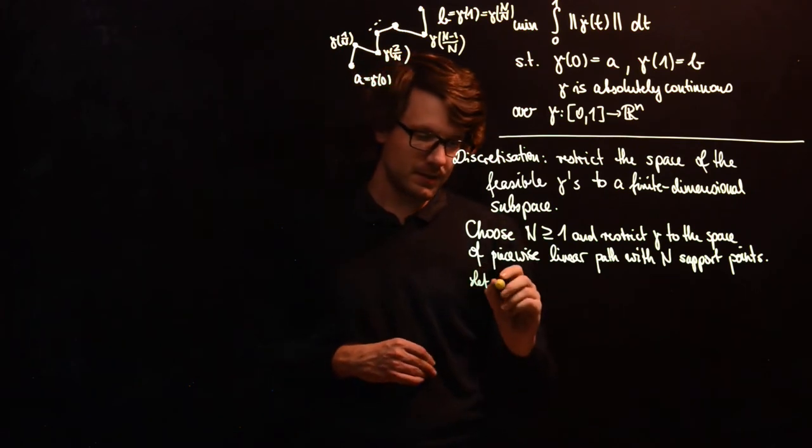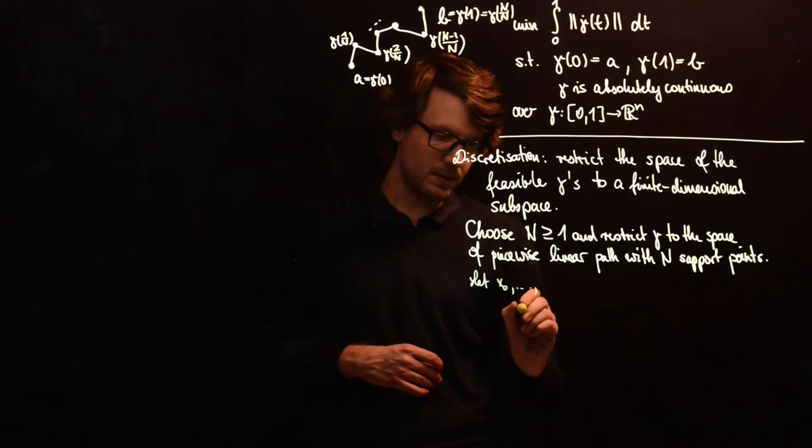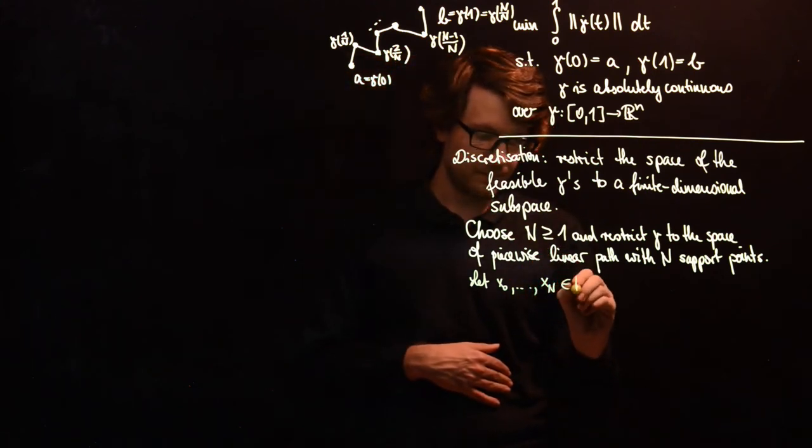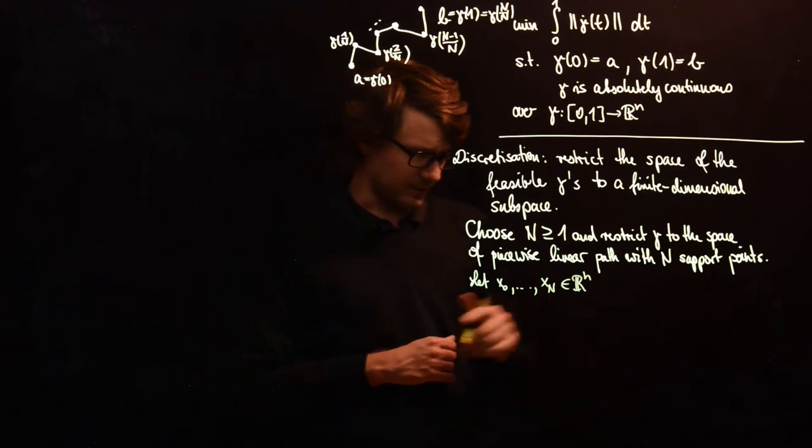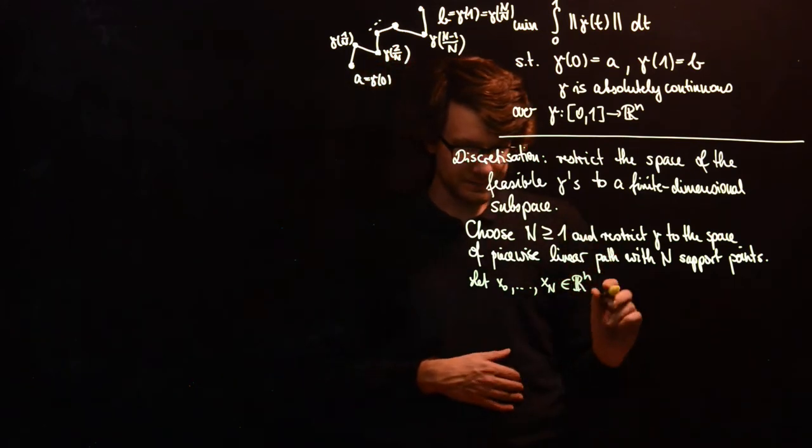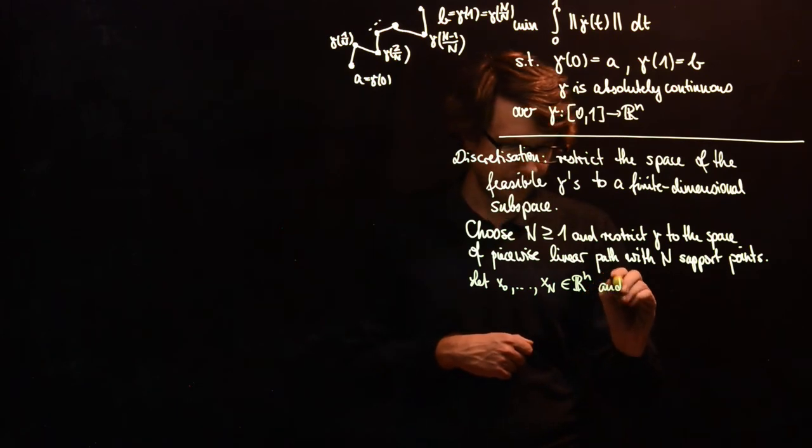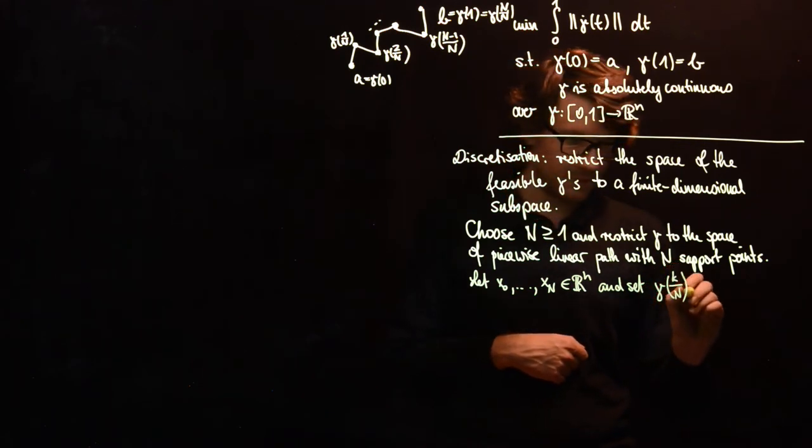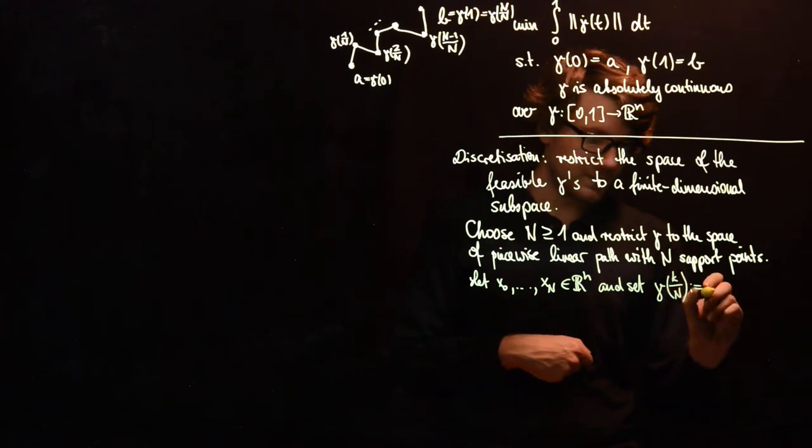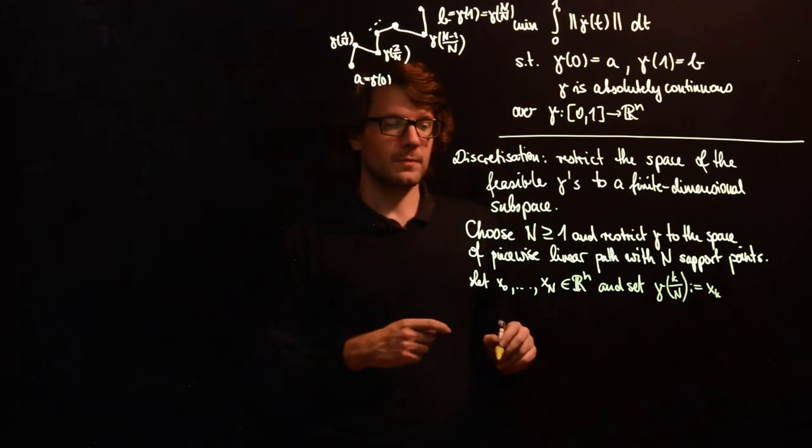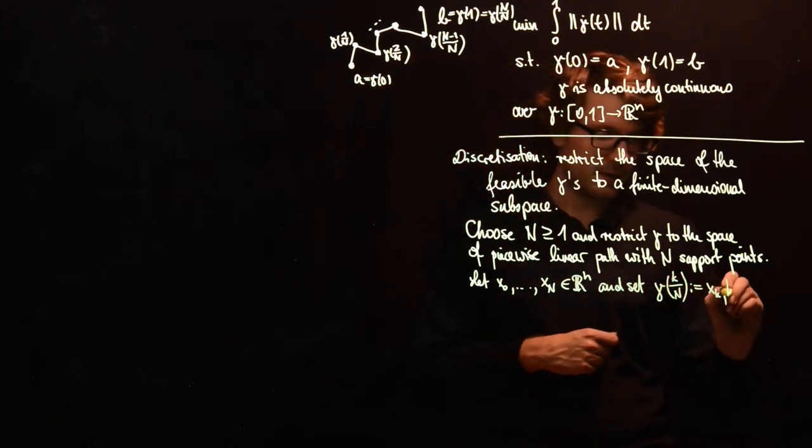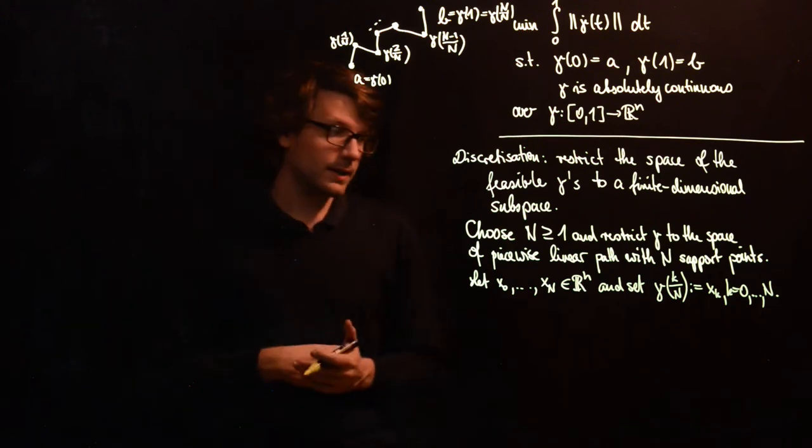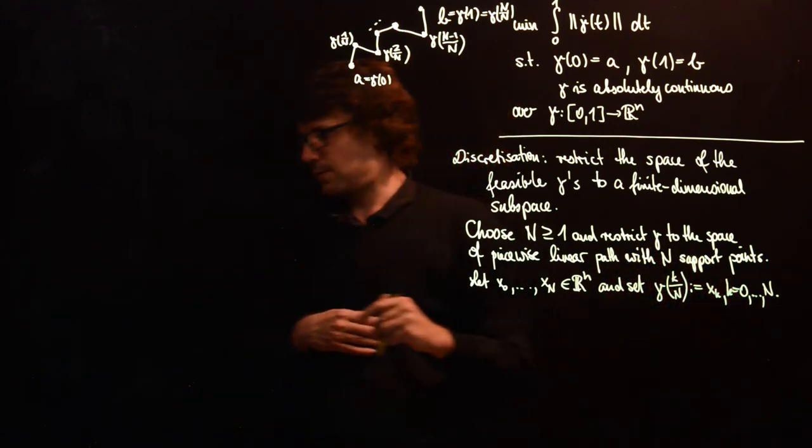So the idea is that we choose N plus 1 points from x0 to x capital N in Rn, and this is the small n, and we set gamma of K over capital N and define this as xK for each K between 0 and capital N.